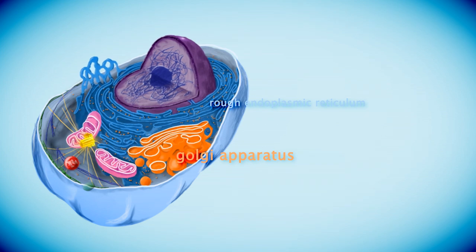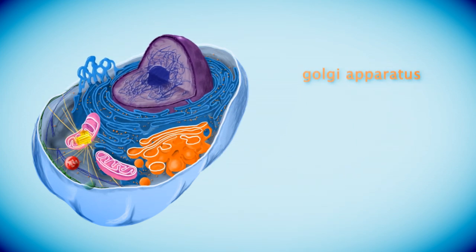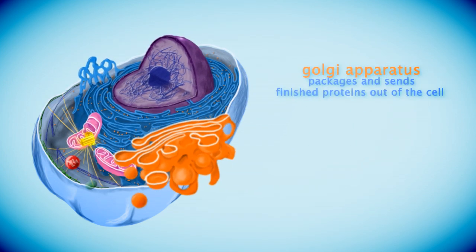The Golgi apparatus then sends the proteins to the cell membrane, where the protein will leave the cell and be used by the animal's body.